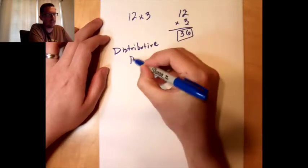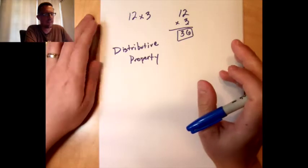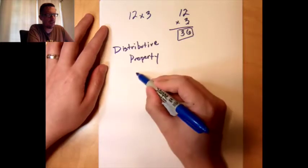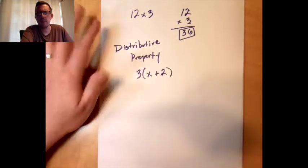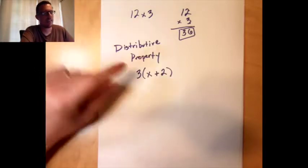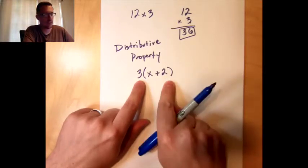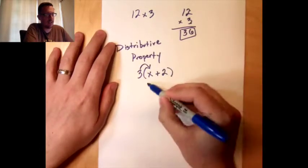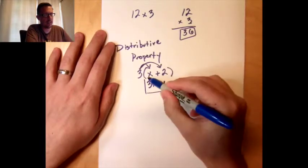The distributive property is something you probably learned in algebra 1, maybe a little earlier. When you learn the distributive property, it looks something like 3 multiplied by the quantity x plus 2. This 3 outside of the parentheses needs to get multiplied by both terms inside: we multiply 3 by x and 3 by 2. So 3 times x is 3x, and 3 times 2 is 6, giving us 3x plus 6.